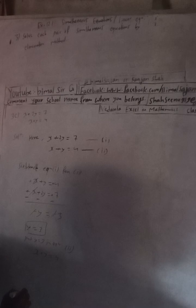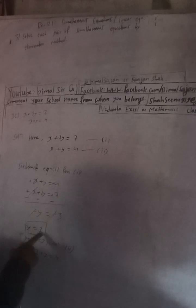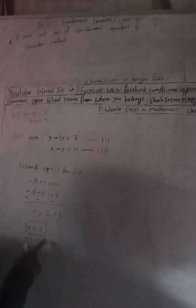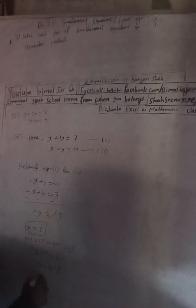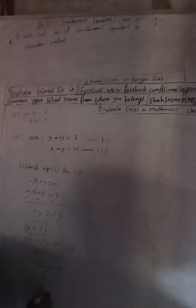In place of y, we put 3. So x plus 3 is equal to 4. Therefore x is equal to 4 minus 3, which gives x is equal to 1. So our final answer is x is equal to 1 and y is equal to 3.